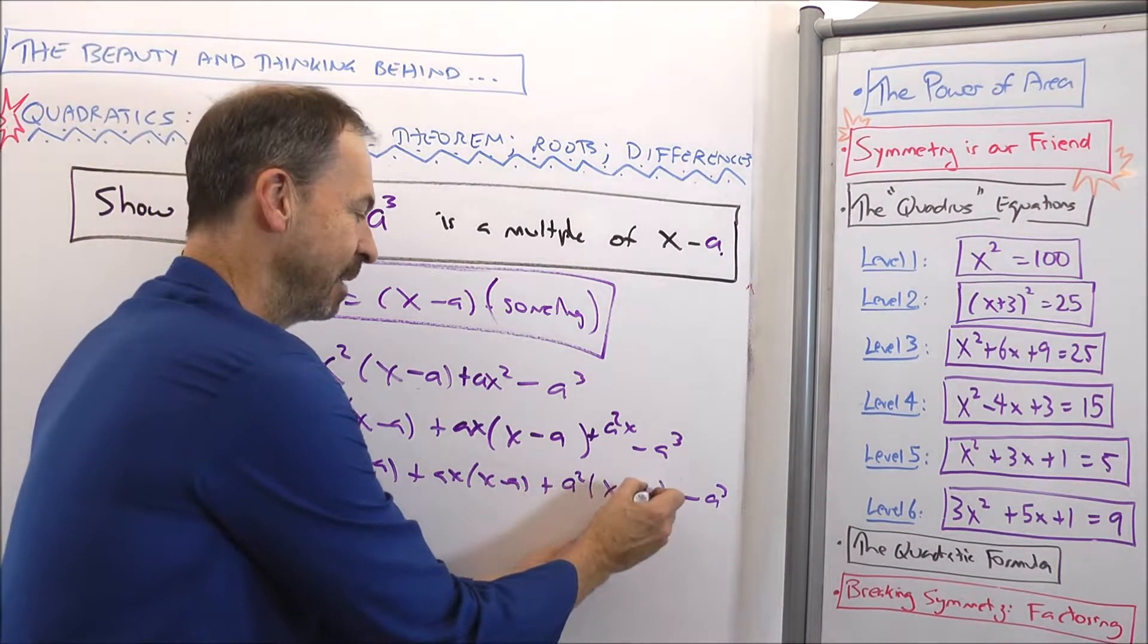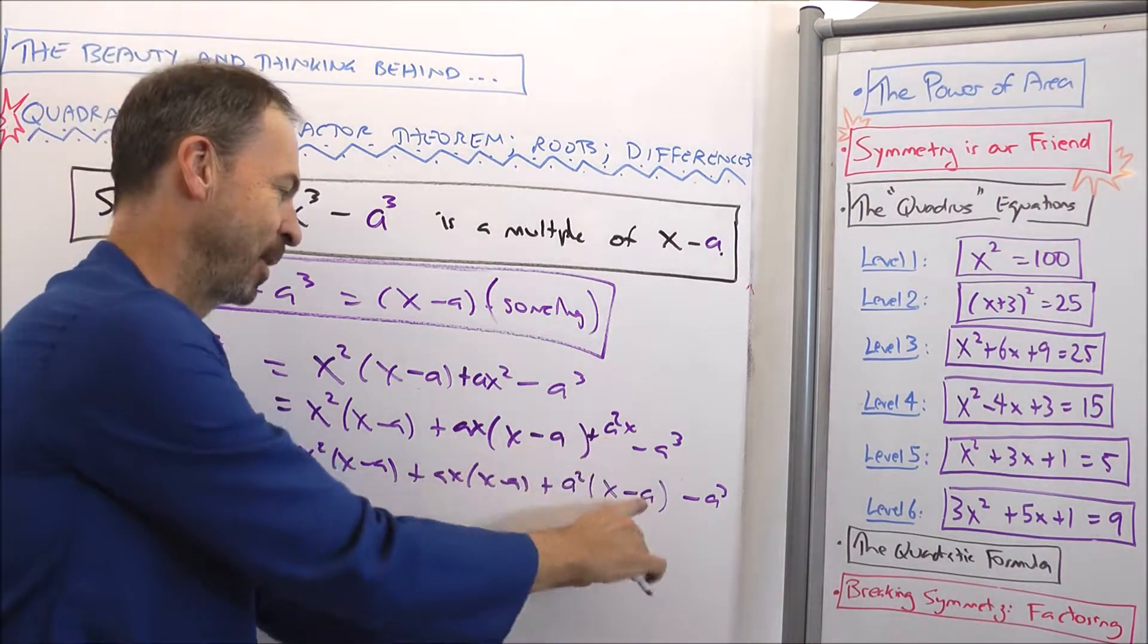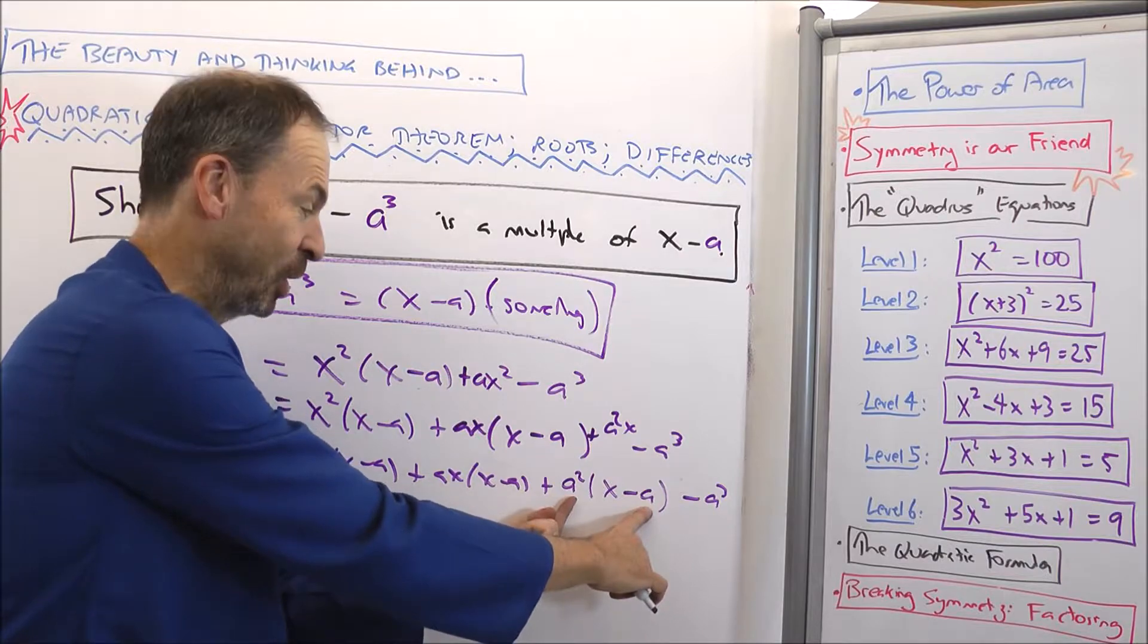But I want x minus a, not just an x. So there's a²x. Bingo. But I've just now introduced a negative a³.